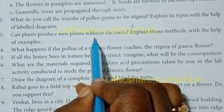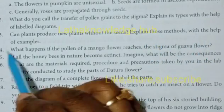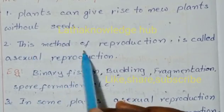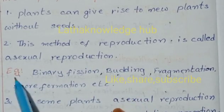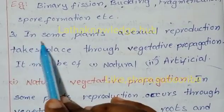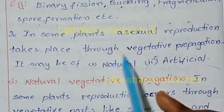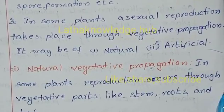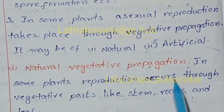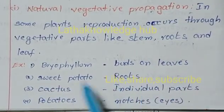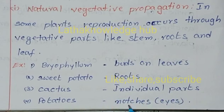Can plants produce new plants without seeds? Explain those methods with examples. Plants can give rise to new plants without seeds - this method is called asexual reproduction. Examples include binary fission, budding, fragmentation, and spore formation. In some plants, asexual reproduction takes place through vegetative propagation, which may be natural or artificial. In natural vegetative propagation, reproduction occurs through vegetative parts like stems, roots, and leaves - examples: Bryophyllum through leaves, sweet potato through roots, and potatoes through eyes.